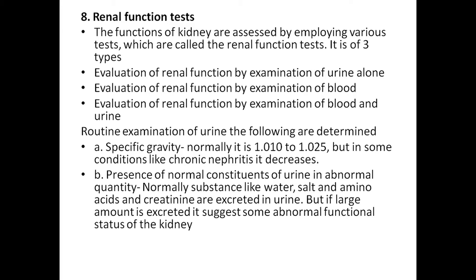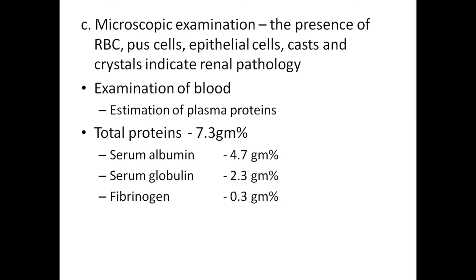Normally substances like water, salt, amino acids, and creatinine are excreted in the urine, but if large amounts are excreted it indicates some abnormal functional status of the kidney. Microscopic examination — the presence of RBCs, pus cells, epithelial cells, casts, and crystals indicate renal pathology.